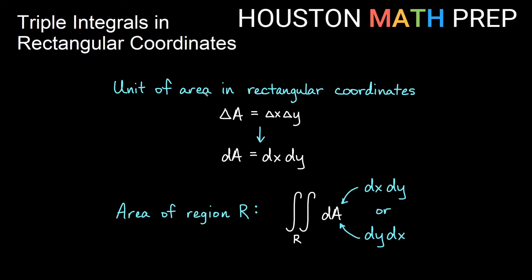If you think back to our video on the unit of area in rectangular coordinates when we had double integrals, we had a little box that was some width times some height for that area. As we crammed many more rectangles into an area in the plane, we thought of each as a microscopic amount of area — a microscopic width times a microscopic height. So our unit of area for double integrals in rectangular coordinates was dA, which was dx dy or dy dx. To find the area of a region R, we used a double integral of dA, choosing dx dy or dy dx based on the shape of that region.